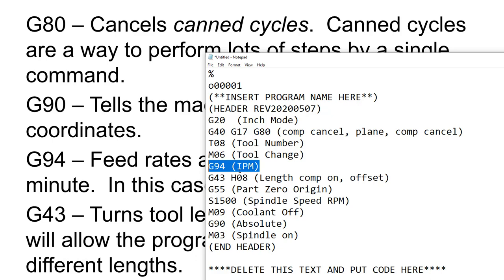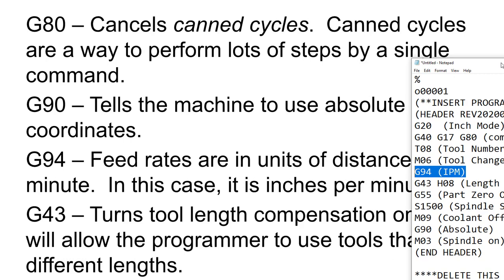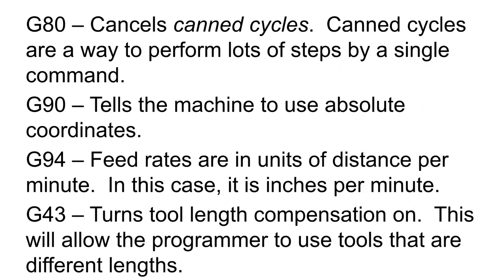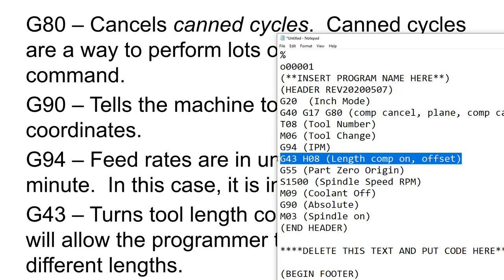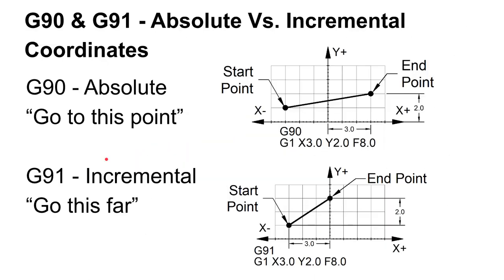Instead of inches per minute, we could use lathe feed rates — inches per revolution — where you program the cutter to go a certain number of inches per revolution. But that's unusual, so we'll stick with G94. Then G43 turns the tool length compensation on. We'll talk about other ways to compensate for the tool later, but today we're just talking about length compensation.